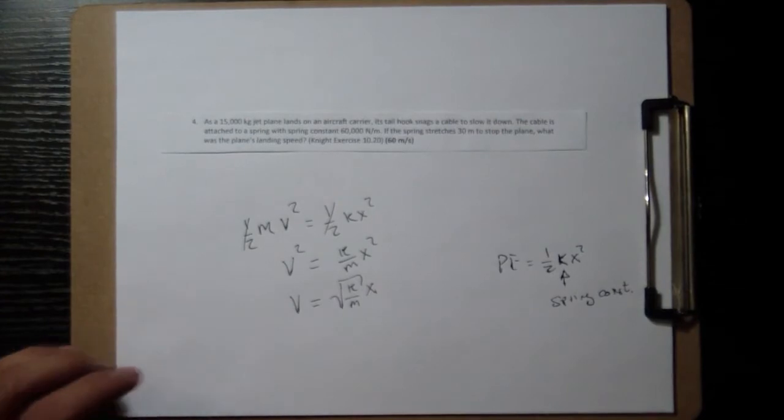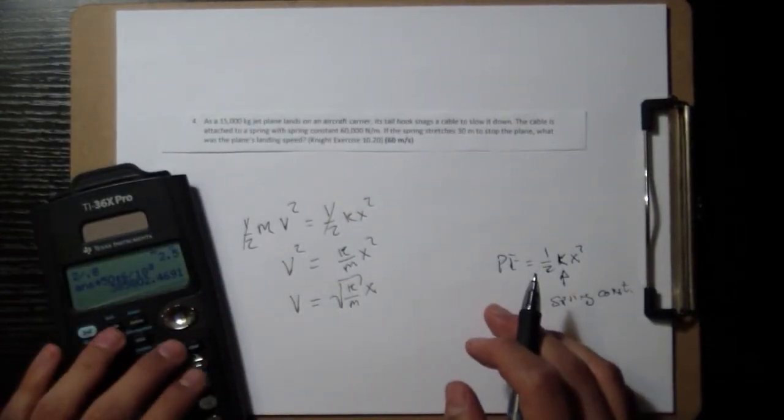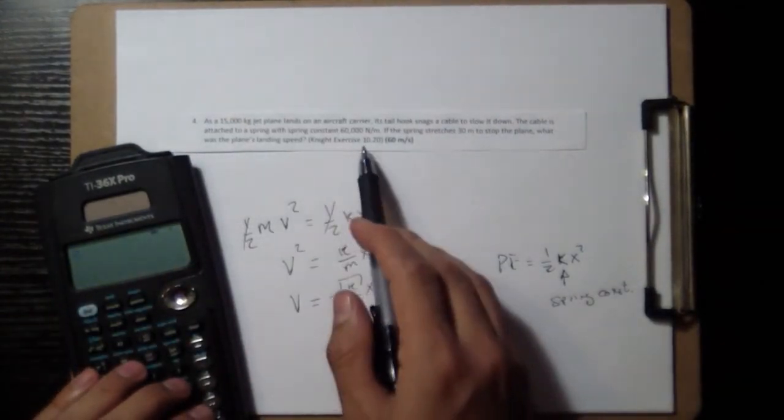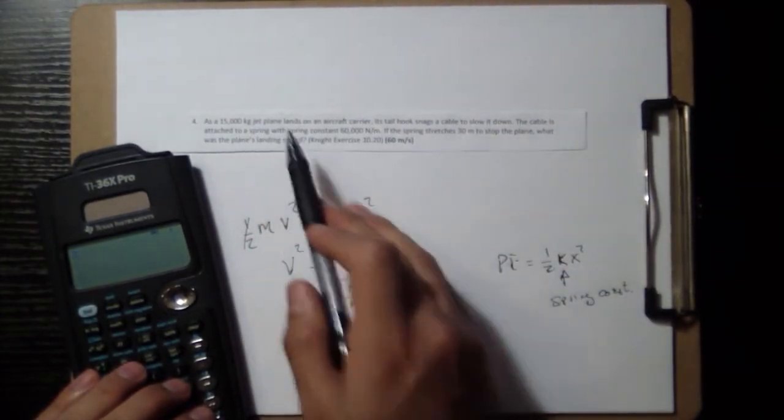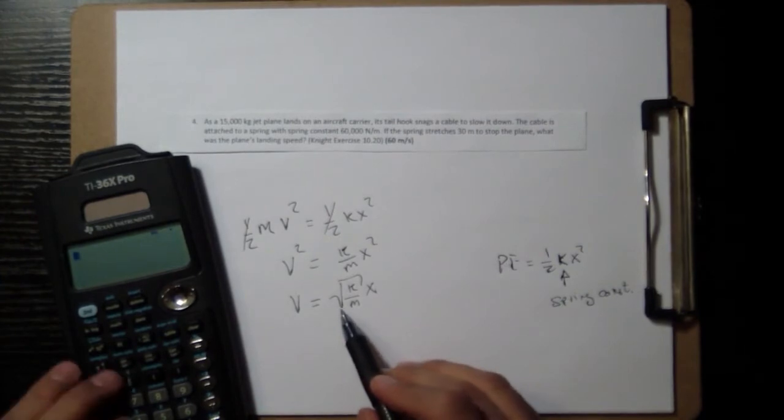And if we plug in some numbers, taking care of the fact that we have very big numbers, but I think everything is still in SI units: meters, newtons, kilograms. So take a square root.